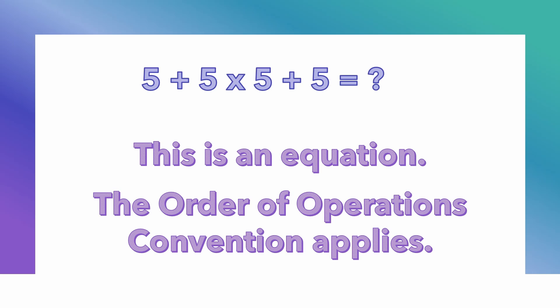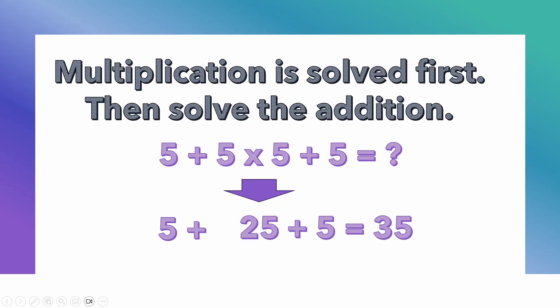The second thing I want to stress is that the Order of Operations Convention does apply. This isn't solved just blindly left to right. Multiplication is solved first, because it has a higher priority than addition. So you first take 5 times 5, which is 25. We brought it down, so we have 5 plus 25 plus 5, which equals 35.